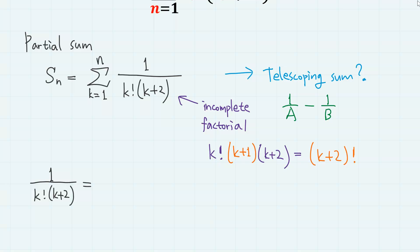But we can forcibly make k plus 2 factorial anyway. We multiply k plus 1 in the denominator, and we multiply k plus 1 at the numerator too. Then, the denominator becomes k plus 2 factorial.